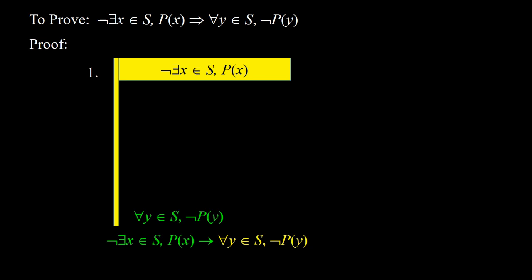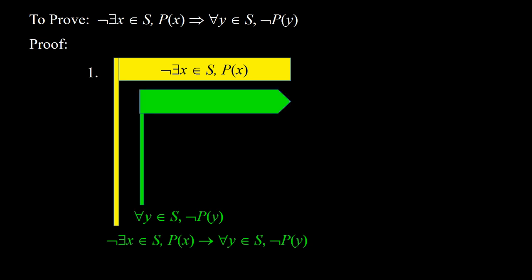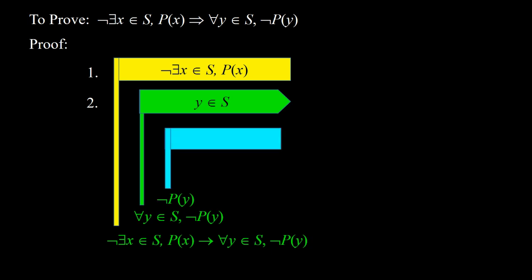Now look at the conclusion — it is in the form of a universal quantifier. To get this, we introduce a pointed flag, then put the domain section, that is y element of s, in the flag, indicating it with 2. Then we try to get not py under the flag. To get not py, we introduce a rectangular flag, put py in the flag, indicate it with 3, and try to get false under the flag.